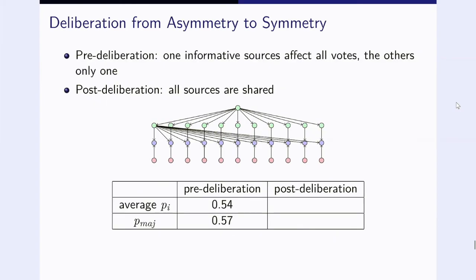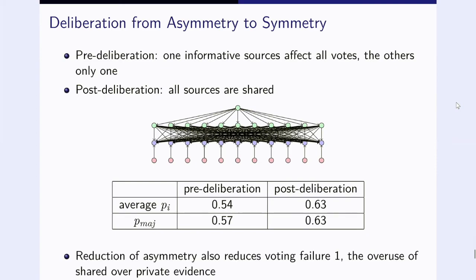You can imagine deliberation from asymmetry to symmetry. Here we start from a situation where one source has been quite dominant initially. The average individual competence is 0.54 and the group competence is 0.57. And then in the deliberation, it sort of equals out. So they now share everything. Again, that's very good. The reduction of asymmetry then also reduces our voting failure one, the overuse of shared over private evidence.